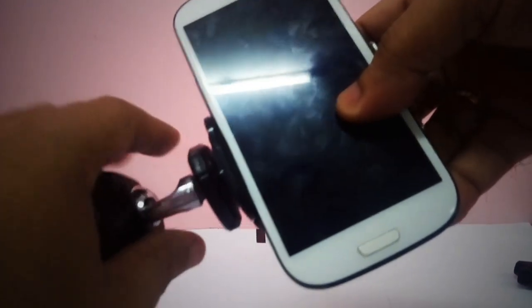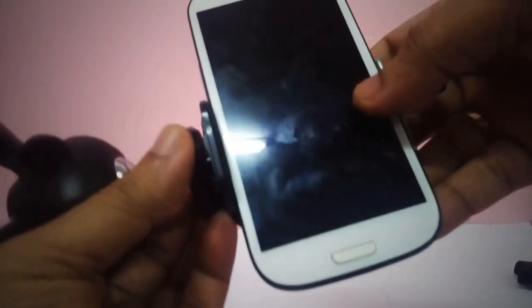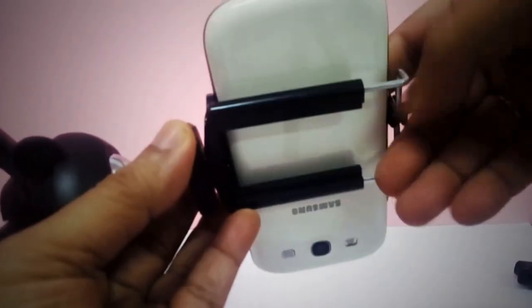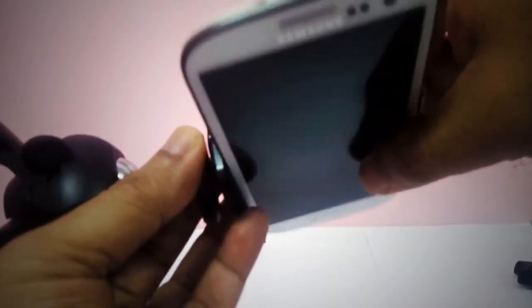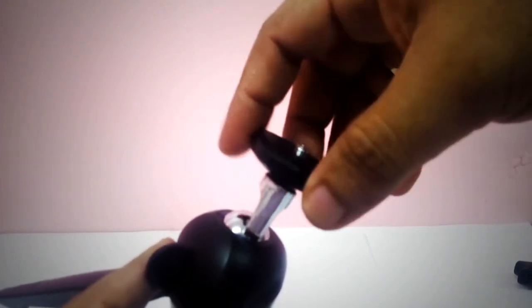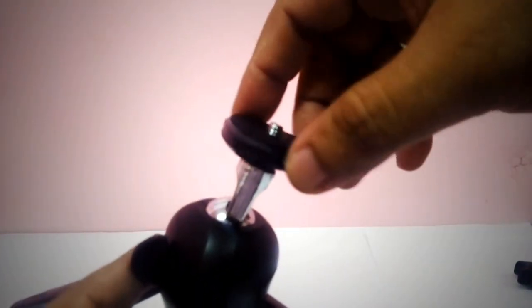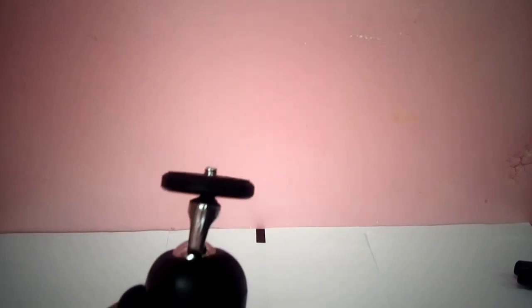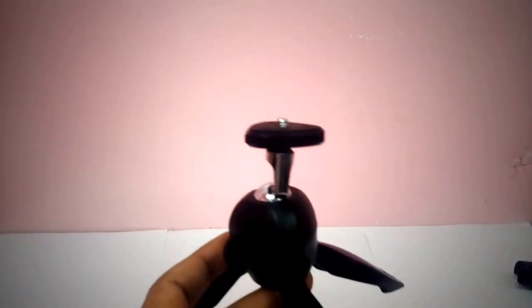To do that, you have to untighten the phone holder from the mini tripod, and then this one, either you can take it out or just put it in there. Okay, next, for this mini tripod to be long enough, we need something like this.